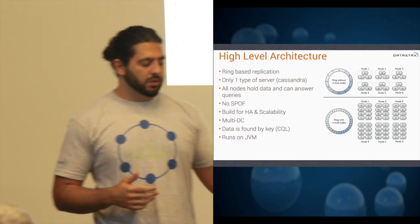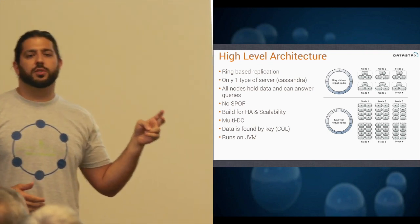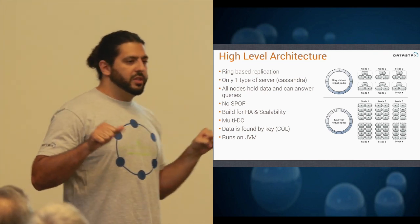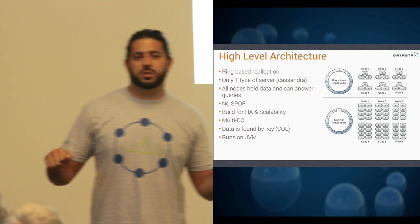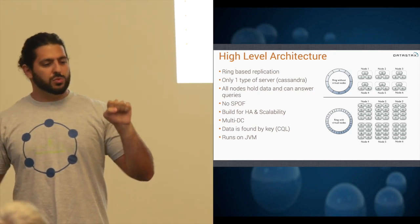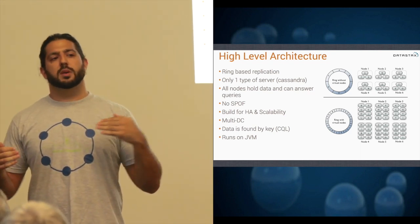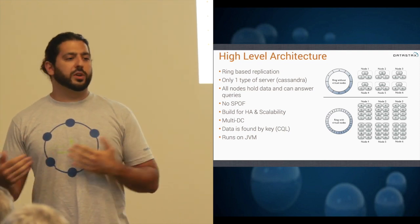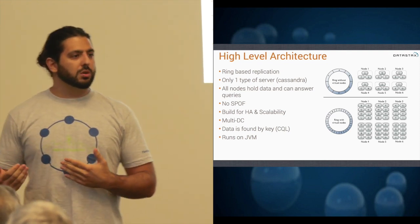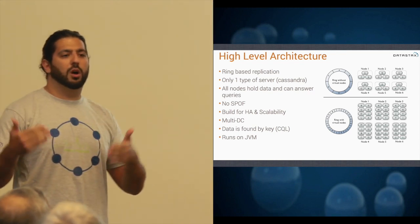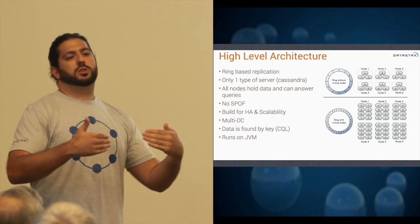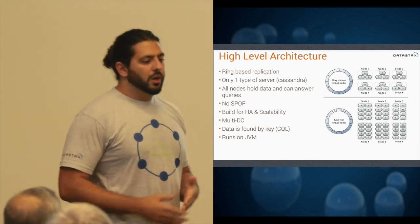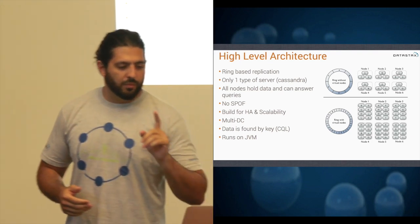Primarily, the two goals that Cassandra was built on top of are high availability and linear scalability. Every single core design decision was built with this in mind. Things that may seem a little weird or different from previous databases you may have used are built with a single rule: this works well with three servers and this also works well with 300 servers.